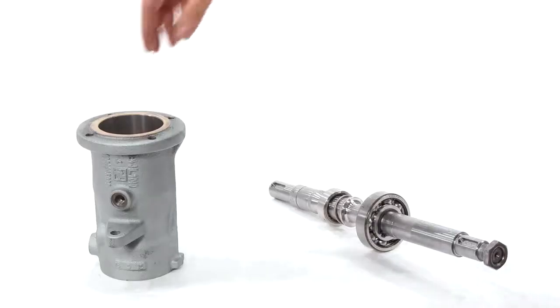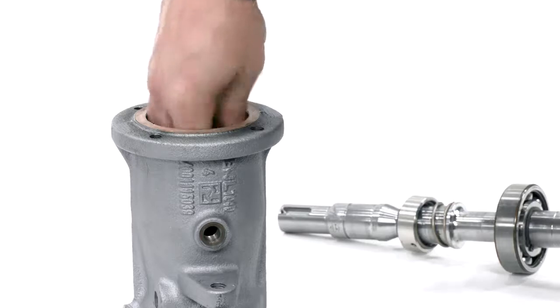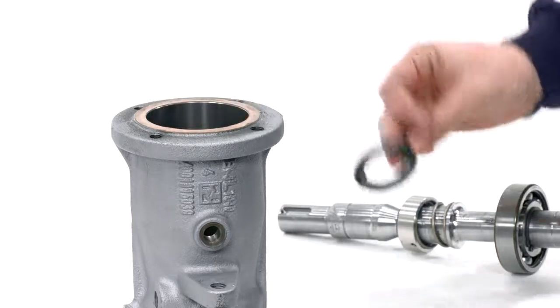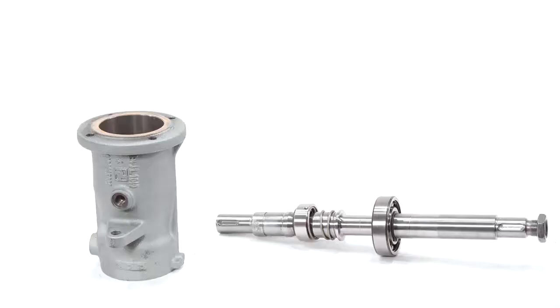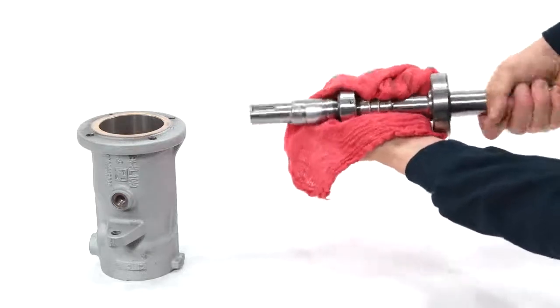Carefully remove the mechanical seal stationary face and o-ring from the bearing housing. Twist the rotating assembly to help remove it from the exposed pump shaft.